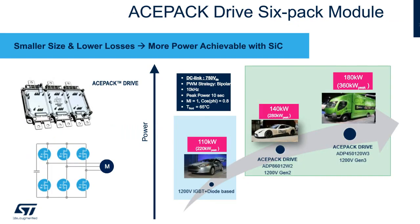Another way to look at the lower losses and higher power density of silicon carbide is to look at the power achievable in the same footprint. The die area is significantly smaller for silicon carbide, which means we can put more dies in the package and achieve higher peak power. In this roadmap-like picture, you can see we can achieve more power with silicon carbide Gen 2 from ST, and even higher power with the new coming Gen 3 silicon carbide with lower Rds(on) area, versus an IGBT module.